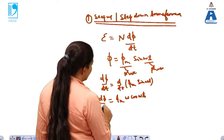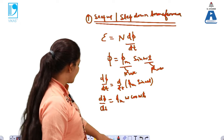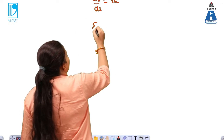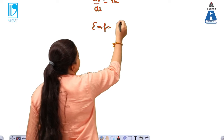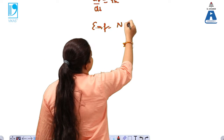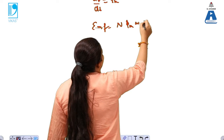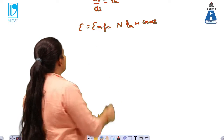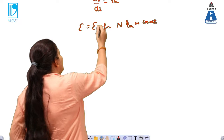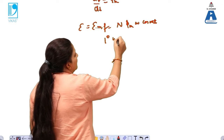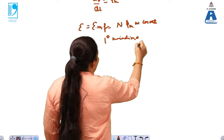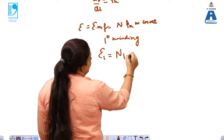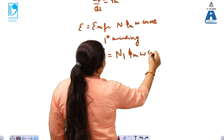The EMF is given by e = N · dφ/dt = N · φm · ω · cos(ωt). This EMF is represented by E. For the primary winding, this EMF is written as E1 = N1 · φm · ω · cos(ωt), where N1 is the number of turns in the primary winding.